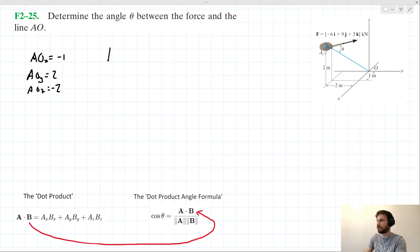OK, so if we want to find the dot product of these two vectors, it might look something like this. So F dot AO, here we've got minus 6 times minus 1 plus 2 times 9 plus minus 2 times 3. Which when we plug into our calculator, we get a value of 18.